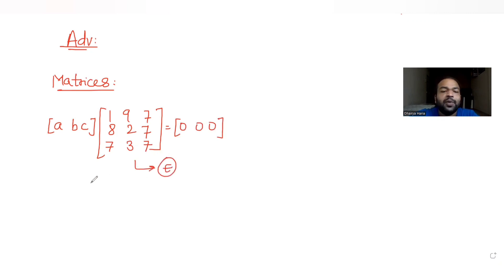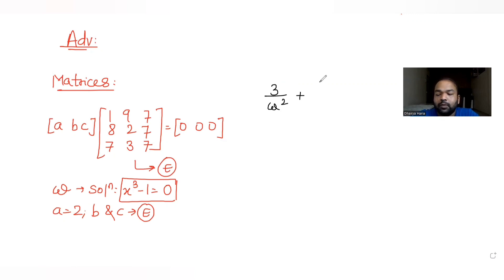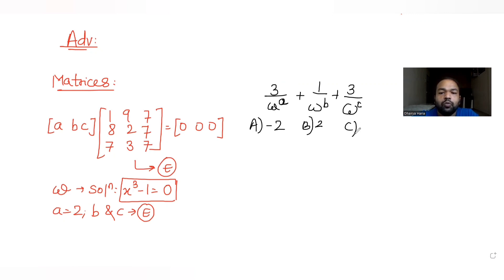We are also given that omega is a solution of the equation x³ - 1 = 0. We are told that a = 2, and b and c satisfy equation E. We need to find the value of the expression: 3/ω^a + 1/ω^b + 3/ω^c. Four options are given: -2, 2, -3, and we need to figure out the correct one.